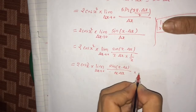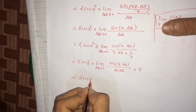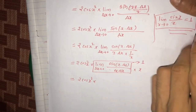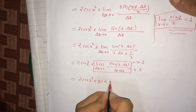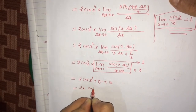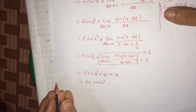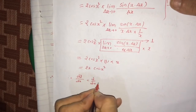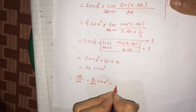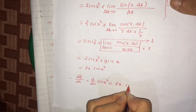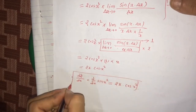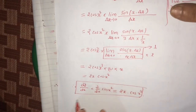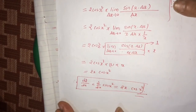This limit equals 1, since it matches the standard form. So we are left with 2 · x · cos(x²). Therefore, the derivative of sin(x²) is d/dx[sin(x²)] = 2x·cos(x²). This is how you can find the derivative of sin(x²) using the first principle of differentiation. Thank you so much.